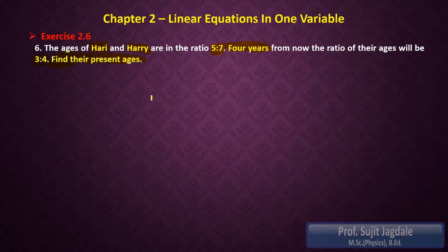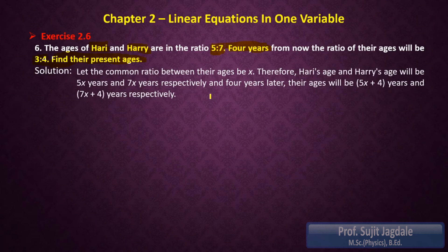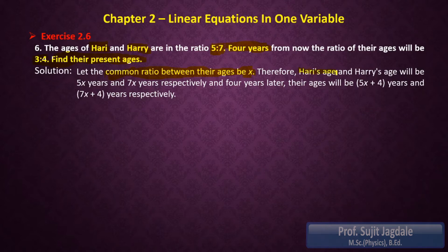We have to find out their present ages with the help of these given conditions. Since a ratio is given, as seen in earlier examples, the common ratio between their ages will be x. Whenever a ratio is given, we take the common ratio as x. Therefore, since their present ages are in the ratio 5 is to 7, the first person's age is 5x and the second person's age is 7x.